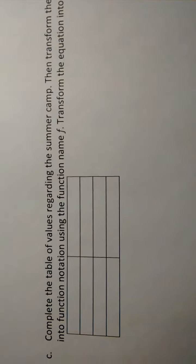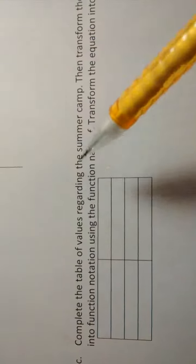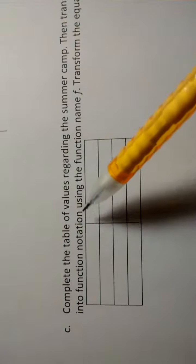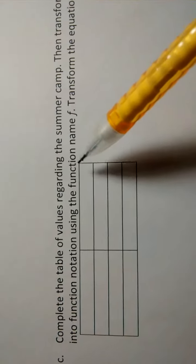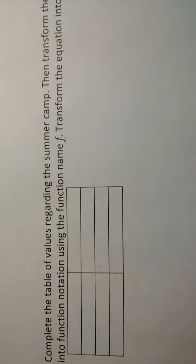Let's go on to part C here of this campsite situation. Complete the table of values regarding the summer camp, then transform the table of values into function notation using the function name F. So that's something I'll share with you here in this video.